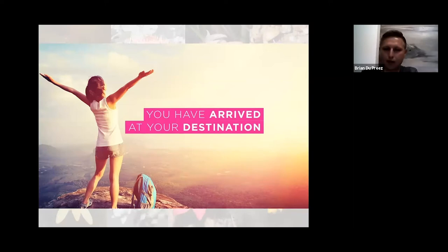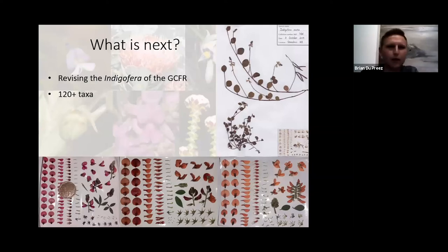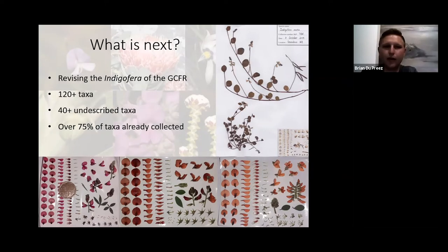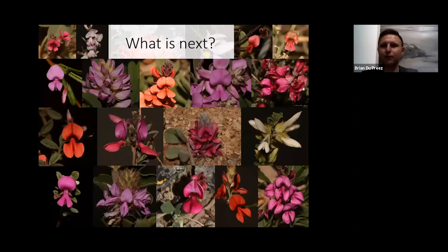What lies ahead for me is my PhD, revising the Indigofera within the Cape Floristic region. We presume there are 120-plus taxa, although the numbers just seem to be increasing as days go by and I keep doing more fieldwork. There are over 40 undescribed taxa just from this region in this genus, and I've luckily collected over 75 of all the Indigofera taxa in and around the Cape Floristic region in the last 16 months. I've really chosen a beautiful group to work on, and I hope to finish my PhD towards the beginning of 2022.